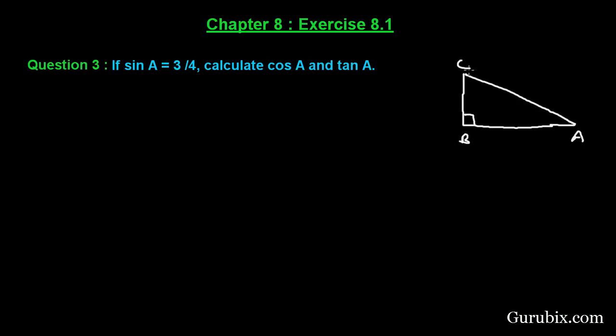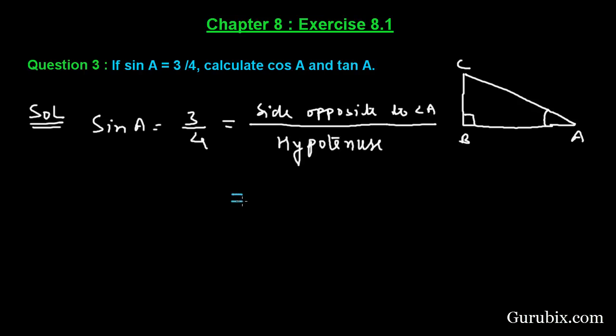We are given sin A is equals to 3 over 4, that is side opposite to angle A over hypotenuse, and this equals BC over AC, where BC is opposite to angle A and AC is the hypotenuse. So this is 3K and this is 4K.